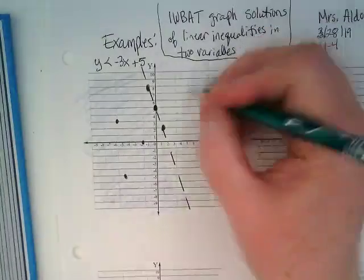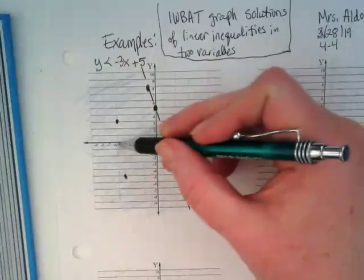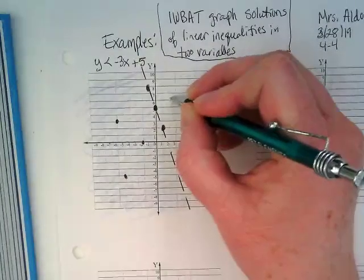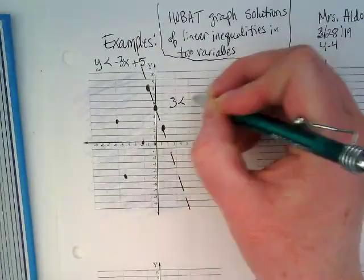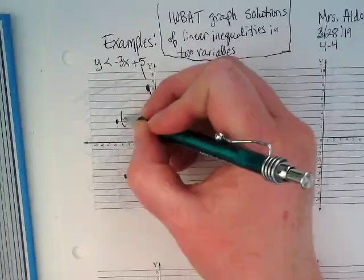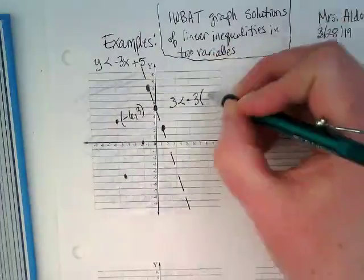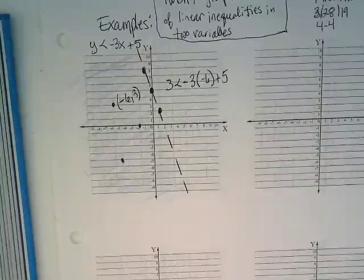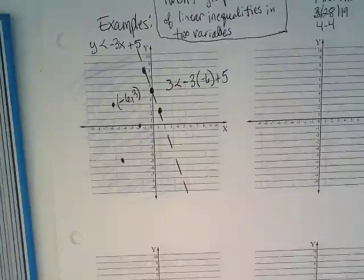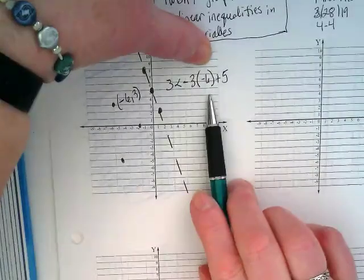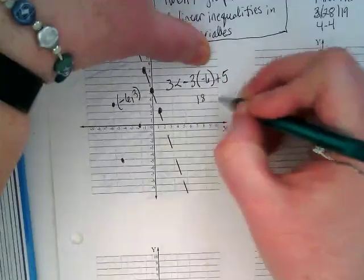We're going to prove it over here. Let me take my point: negative 6, positive 3. So my y would be positive 3 is less than negative 3 times x. Let me write this point so I don't forget: negative 6, 3. Notice what I've done is I've taken one of the points randomly and plugged in the x and y into the inequality. What is negative 3 times negative 6?